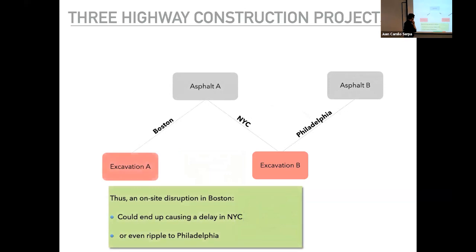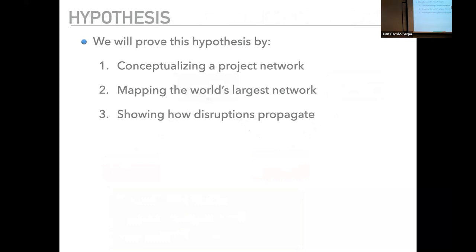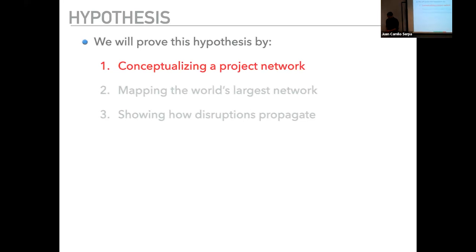This is systemic propagation of a localized disruption across the network. A single project-site disruption can end up causing delays far across the network, and the delays end up being distributed almost equally across the network — just like insurance networks work. So how do we prove this hypothesis? We conceptualize it in a model, then gather data on almost 2.6 million projects and five million delays — probably the world's largest network of infrastructure projects in the US — and show how disruptions actually propagate across the network.